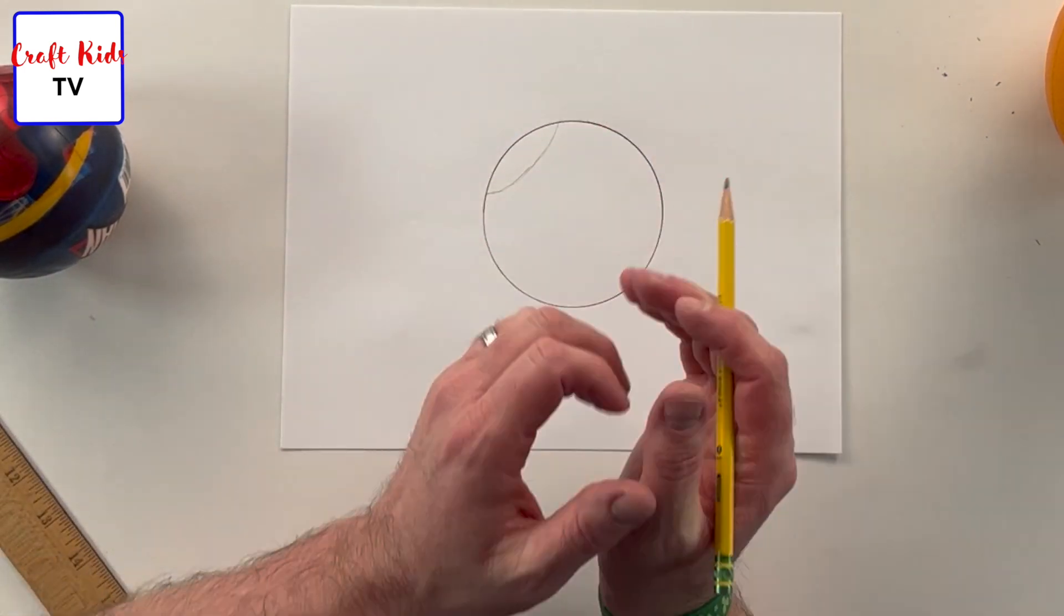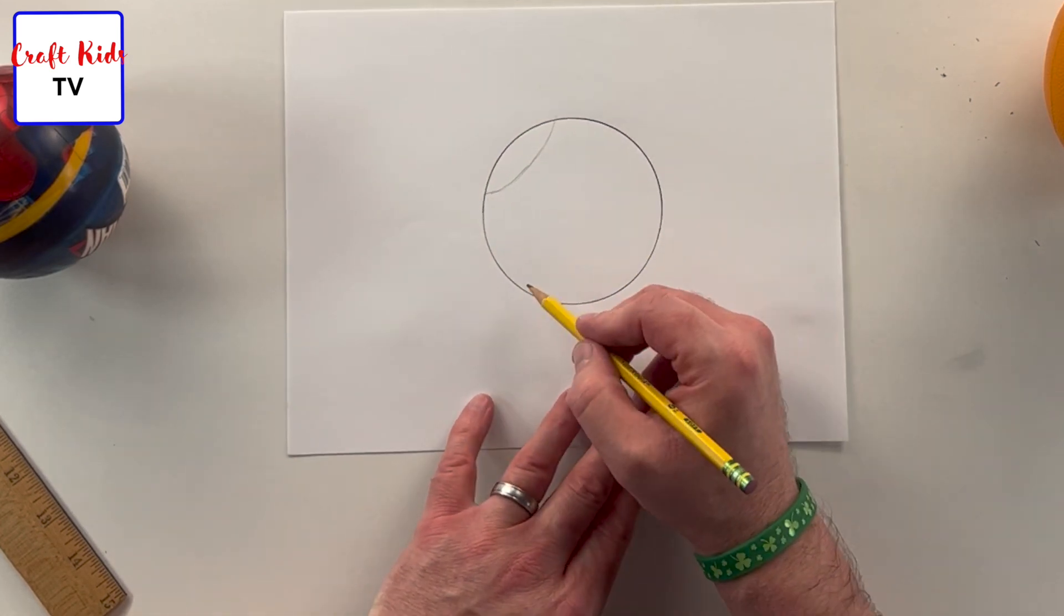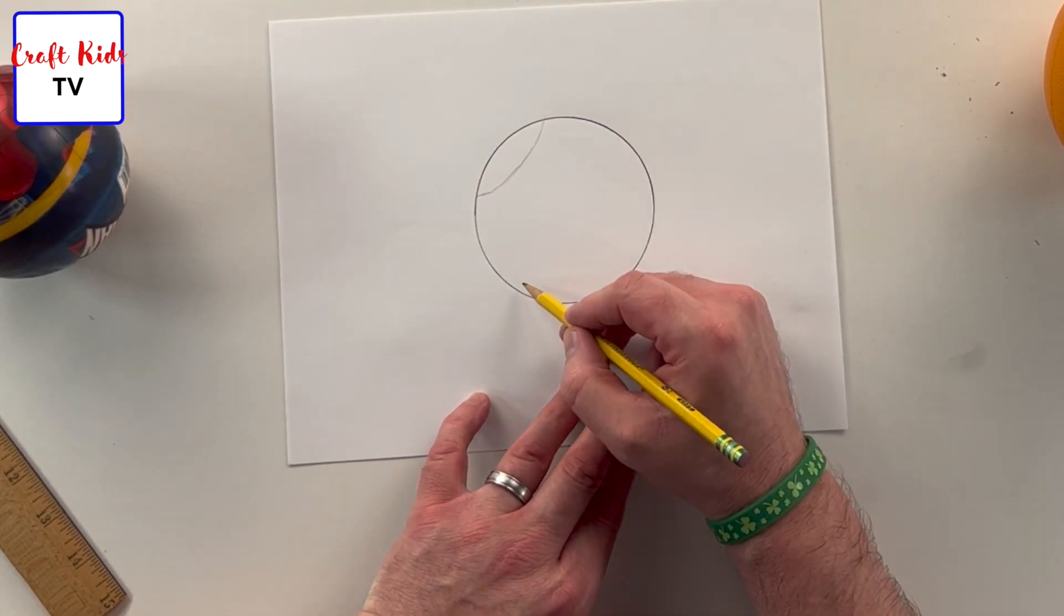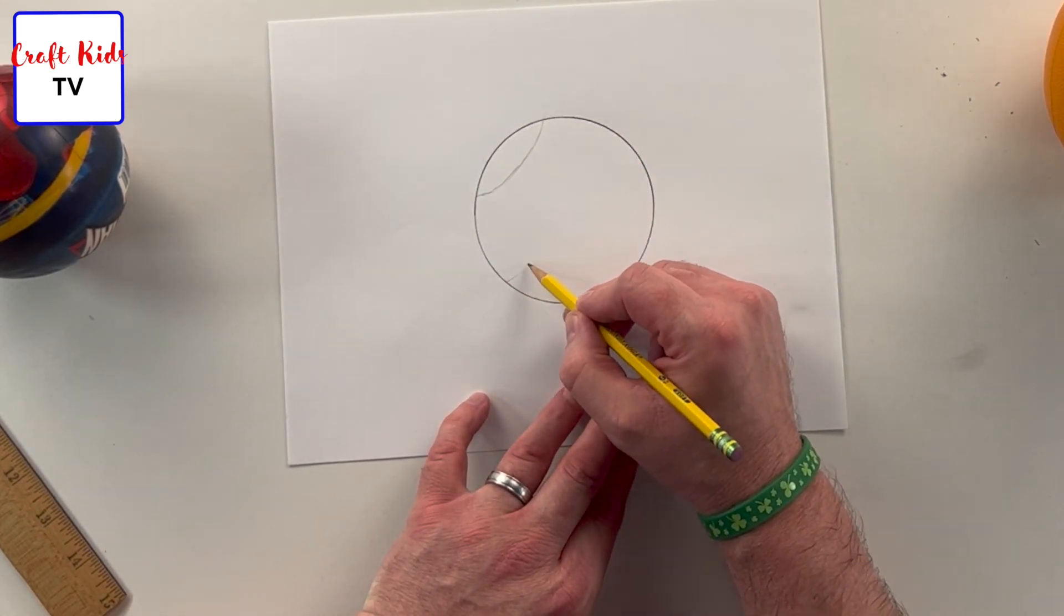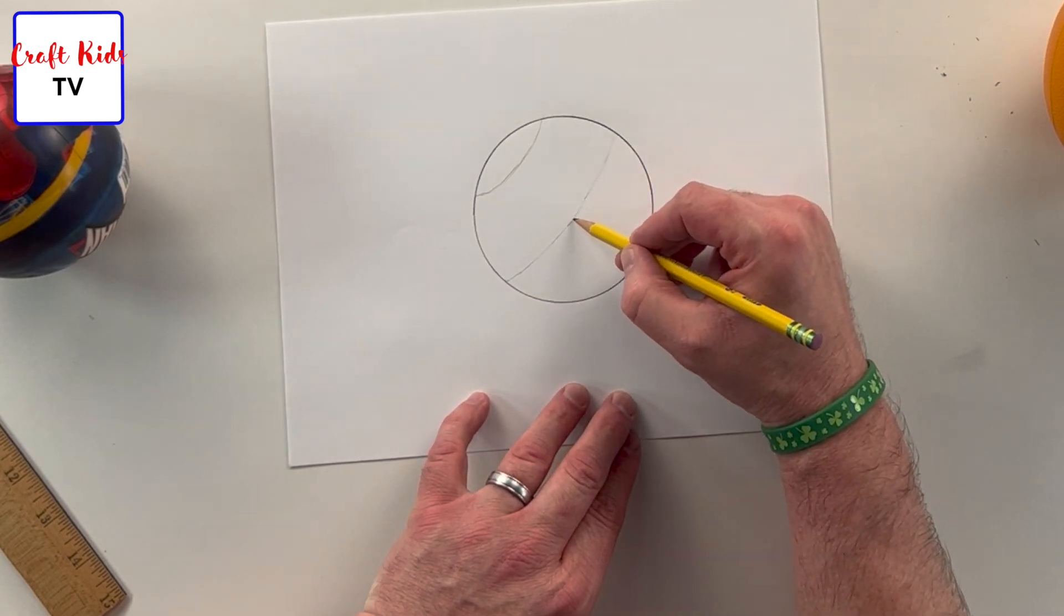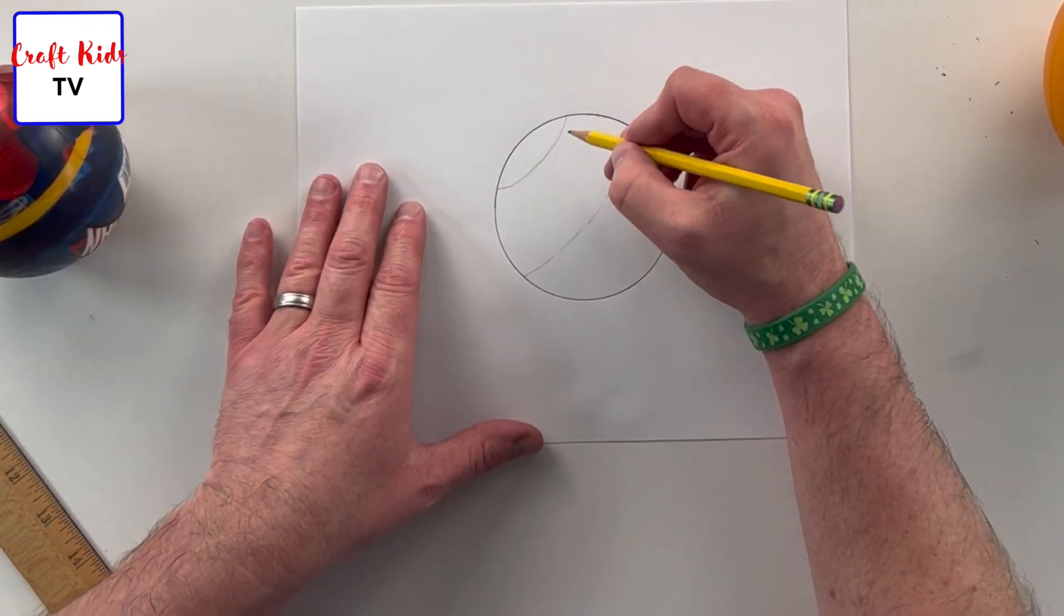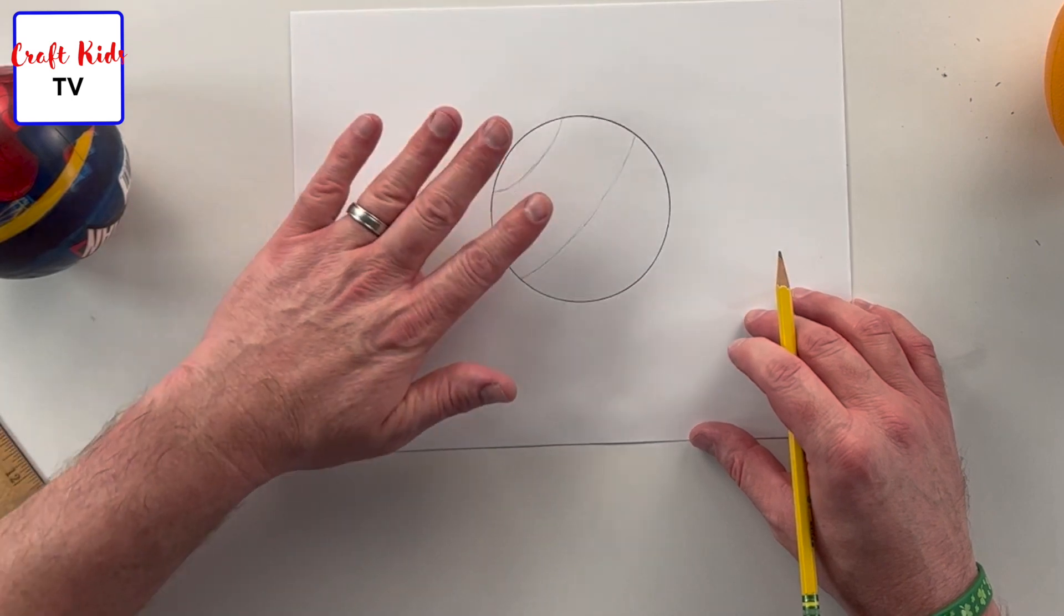That's gonna not be a straight line, it's gonna be a little slight curve to it as you go across. Now again, this being the light side, most of the stuff on this side is going to stay pretty light. This being the shadowed side, we're gonna have to shade most of that in.